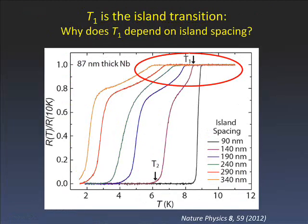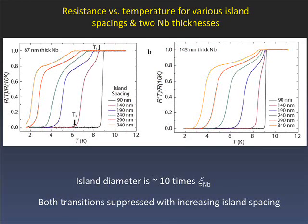Now I want to talk about the first transition T1, where the islands transition. You wouldn't expect T1 to depend on coupling at all — that should just be when the individual islands go superconducting. And yet surprisingly, this transition does depend on island spacing. We measured this on many samples and every time the first island transition is suppressed with island spacing, for both thinner and thicker niobium. This is really unexpected because the islands are much larger than the coherence length of niobium — they should just be bulk superconductors.